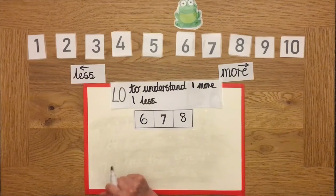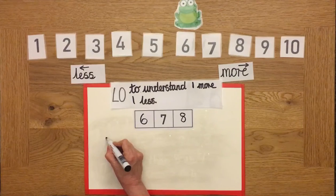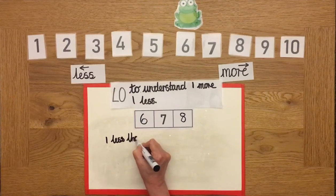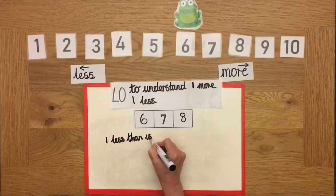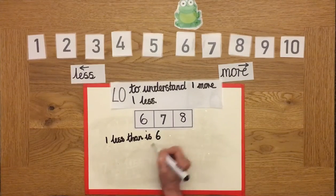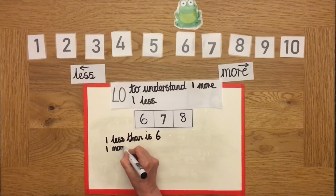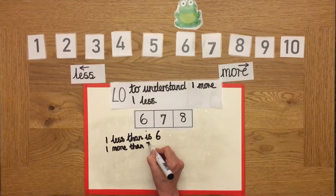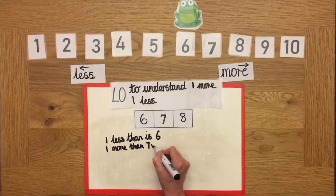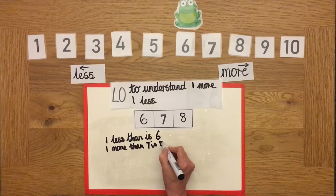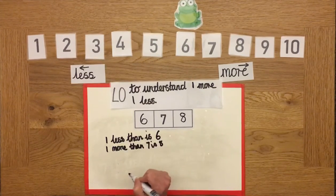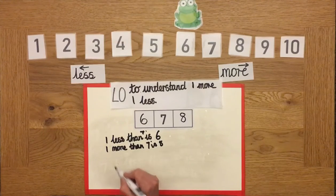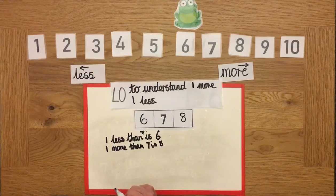Fantastic. Shall we write that up? So we know that one less than seven is six. One more than seven is eight. Fantastic. I've just realised I didn't write that, did I? So one less than seven is six and one more than seven is eight. Fantastic.